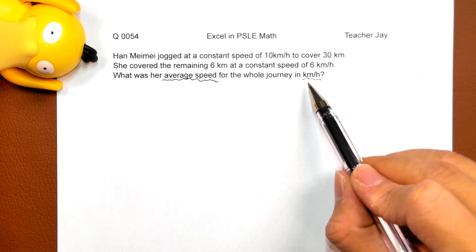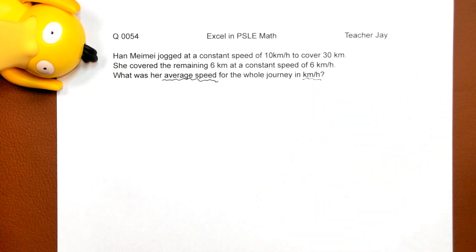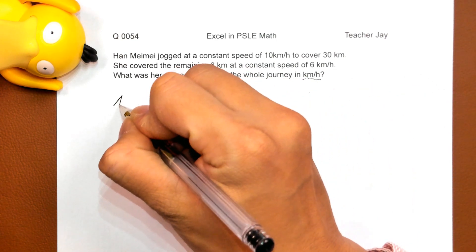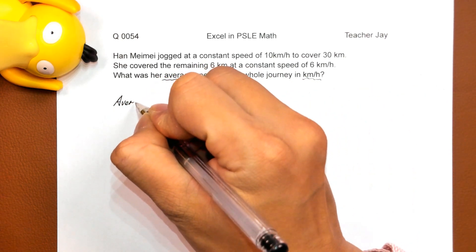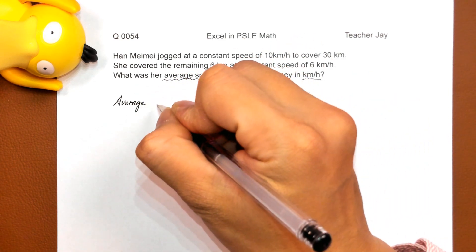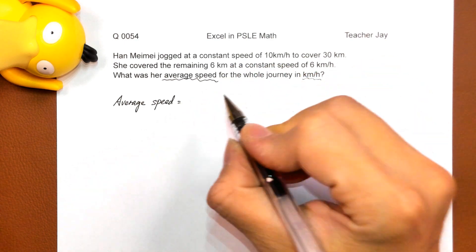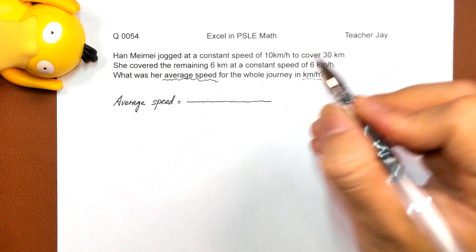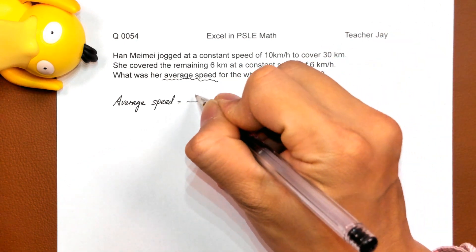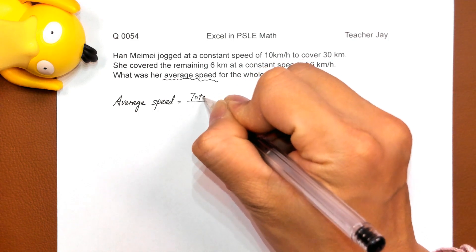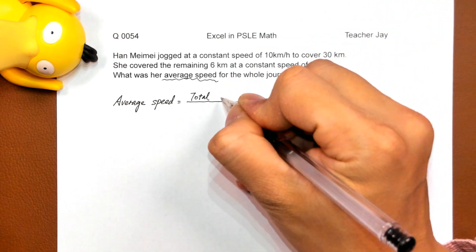她需要用,让我们用这个kilometers per hour来回答这个问题。对于平均速度,我们有一个重要公式。把这个公式摆出来给你的老师看。Show the teacher that you know this formula.